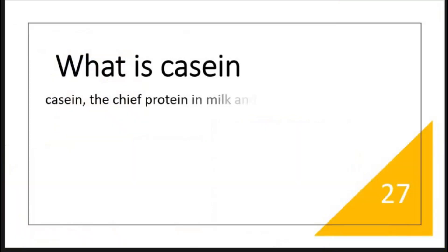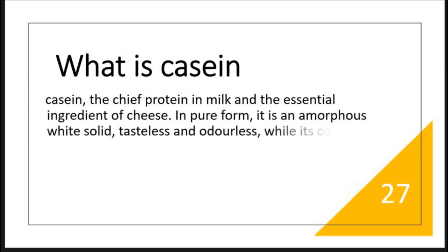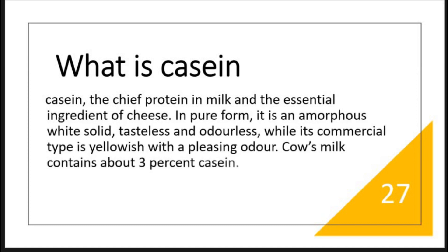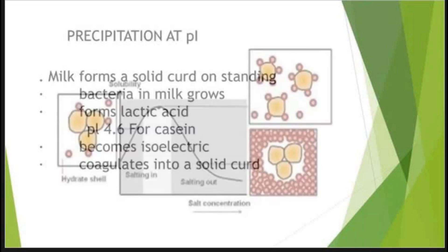Consider milk protein composition: whey protein accounts for 20% and casein, a phosphoprotein, accounts for about 80%. Casein is a cheap protein present in milk and an essential ingredient of cheese. In pure form it is an amorphous white solid, tasteless and odorless, at a concentration of 3 to 4% in cow's milk. It is isolated at pH 4.6, where bacteria in raw milk produce lactic acid, causing casein to coagulate into a solid form.